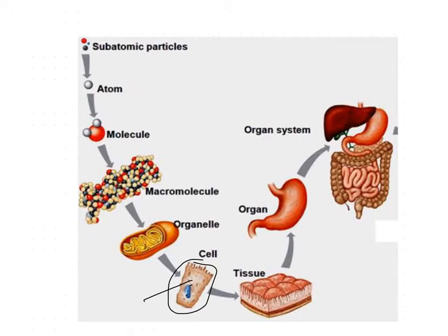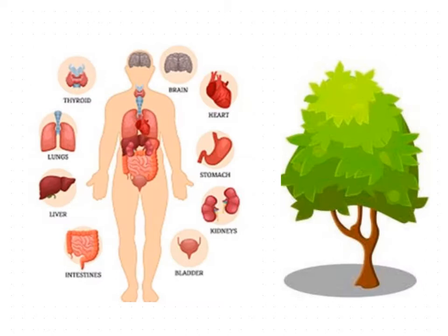Such movements are called molecular movements, which take place at cellular level. Molecular movements are very much essential to sustain life because living organisms are made up of cells. A group of cells having similar shape, size, and function forms a tissue. A group of similar tissues forms an organ. Different organs organized in a certain manner form an organ system, and different organ systems well-organized inside the body form an organism.